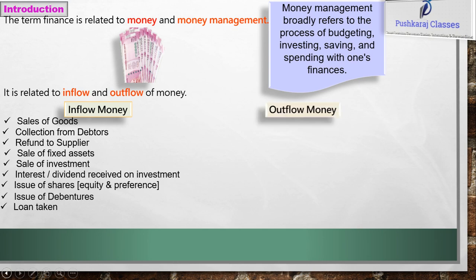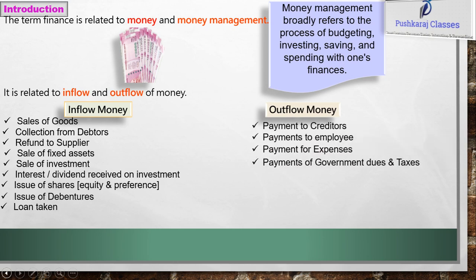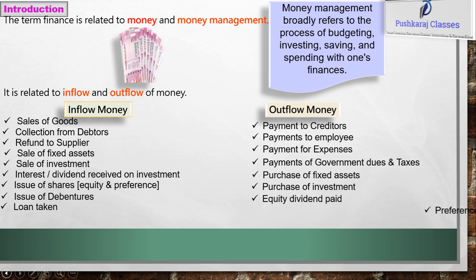Outflow money mein: payment to creditors, payments to employees, payment for expenses, payments of government dues or taxes, purchase of fixed assets, purchase of investment, equity dividend paid, preference dividend paid, and repayment of loan taken.